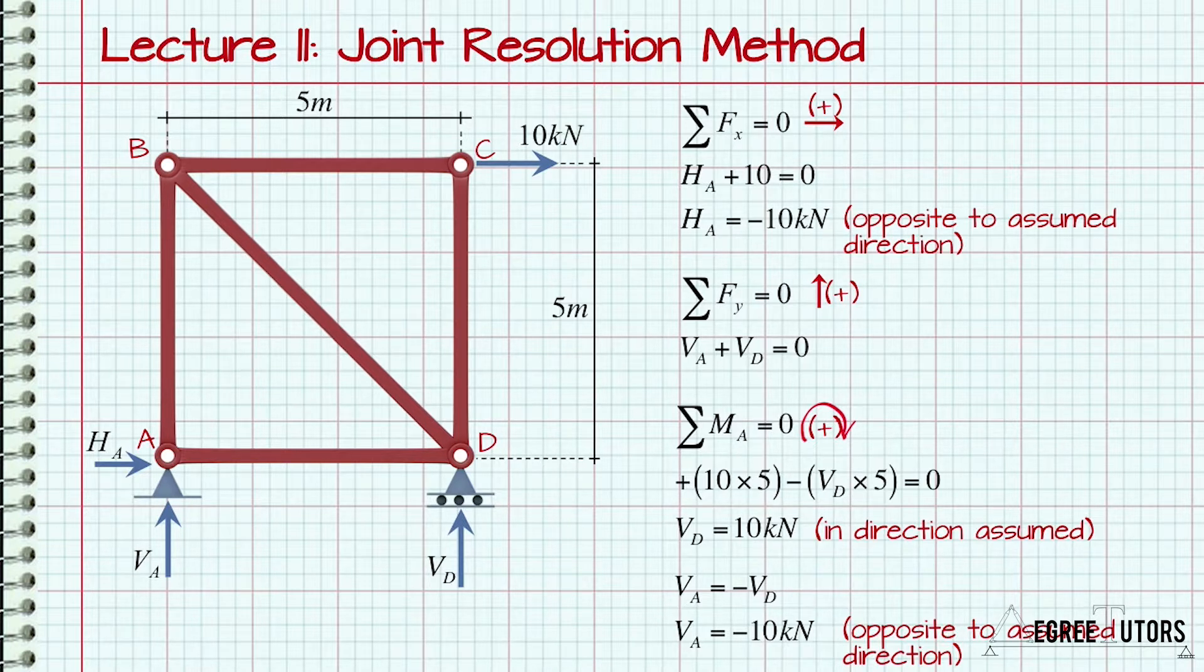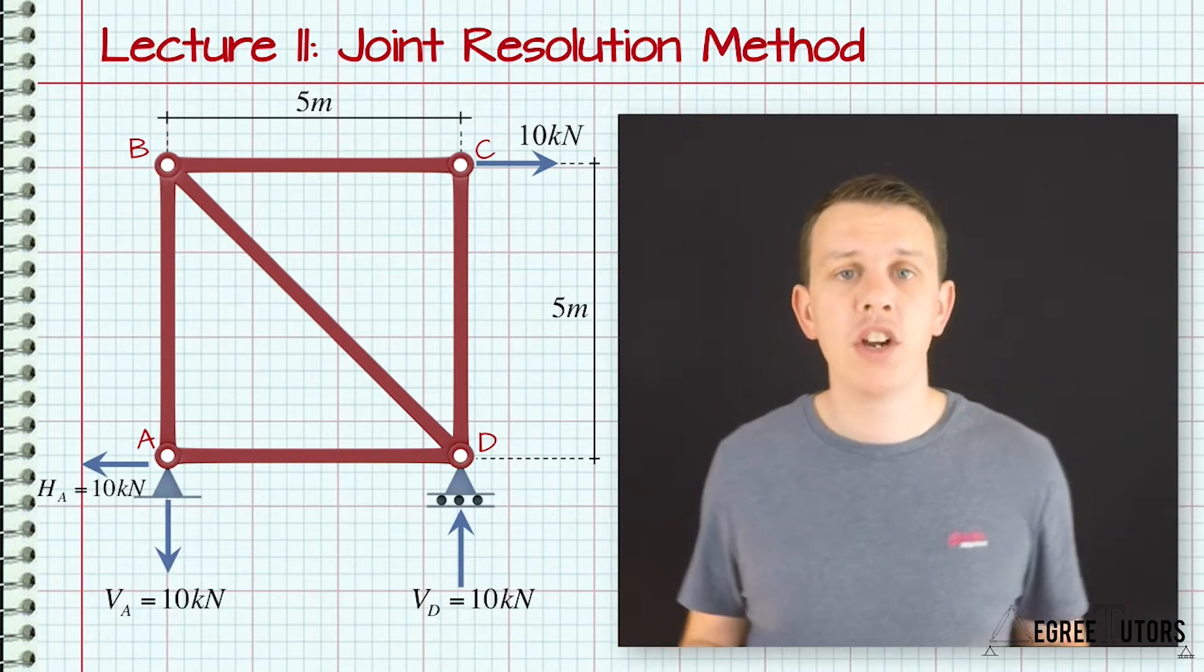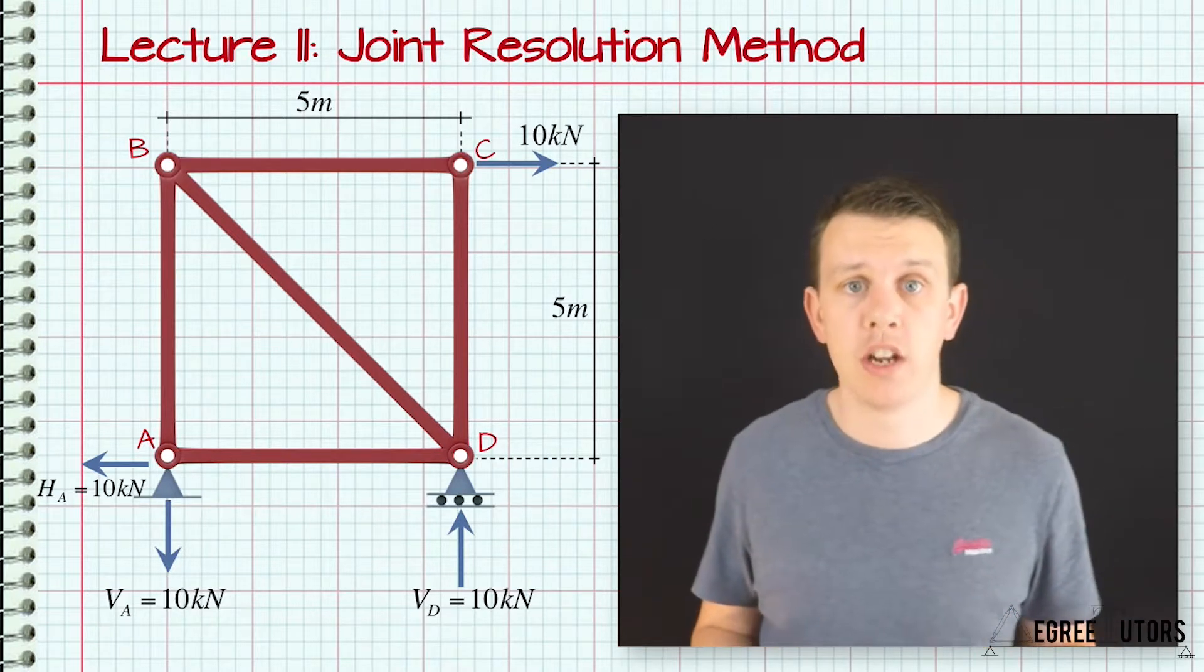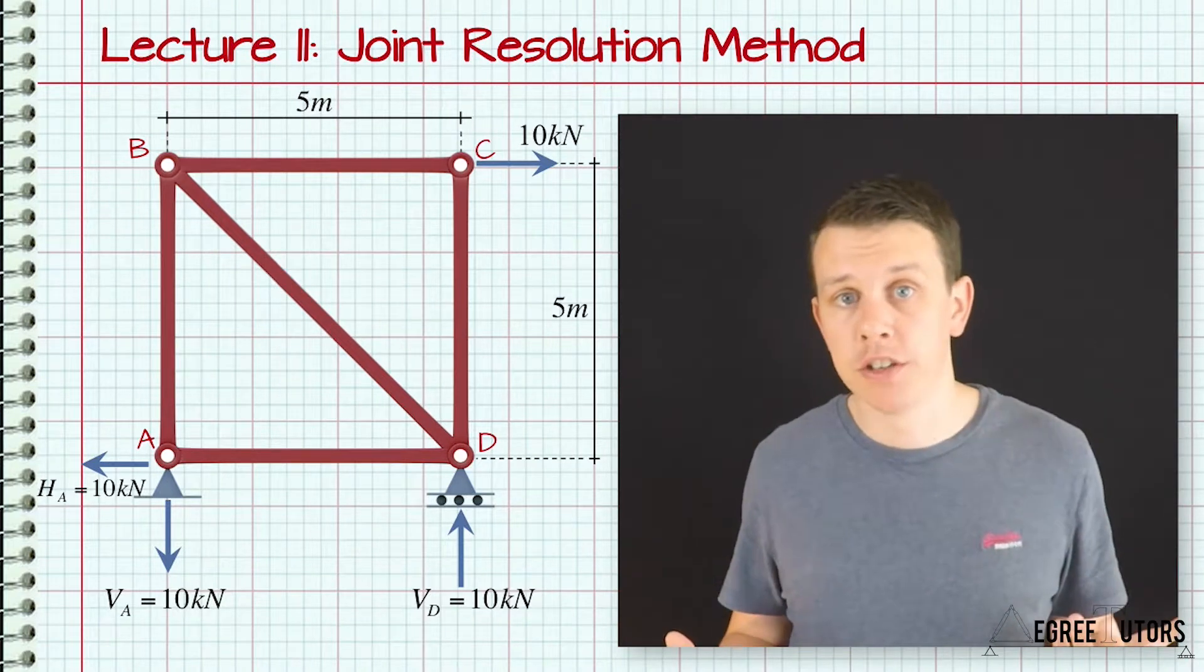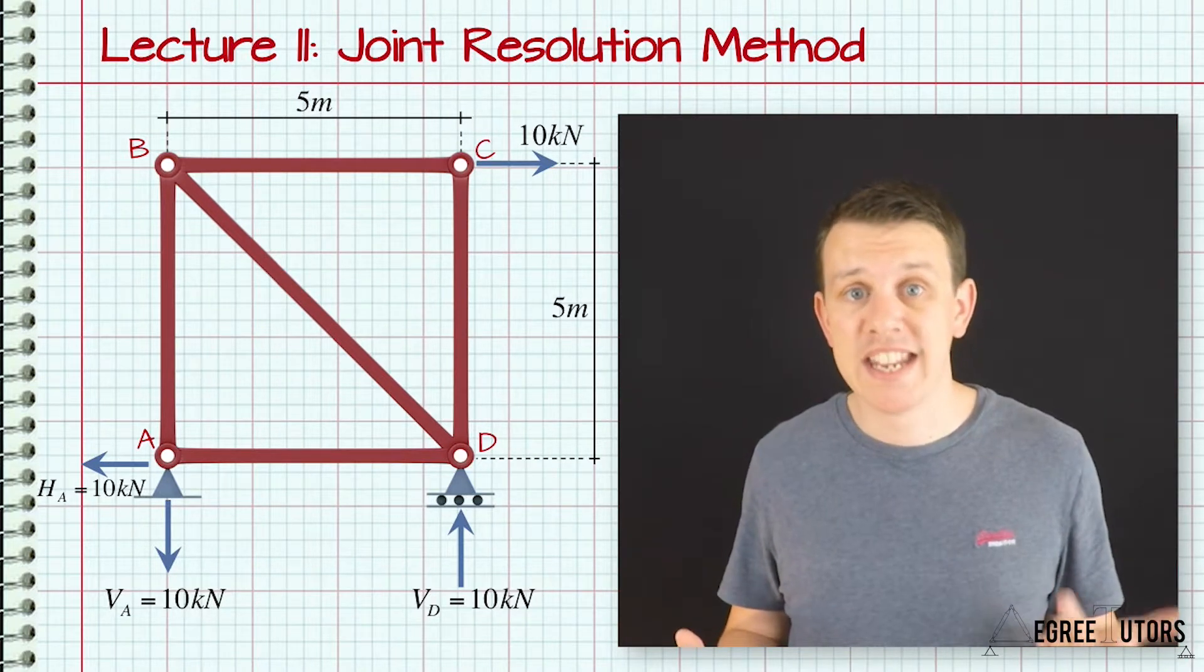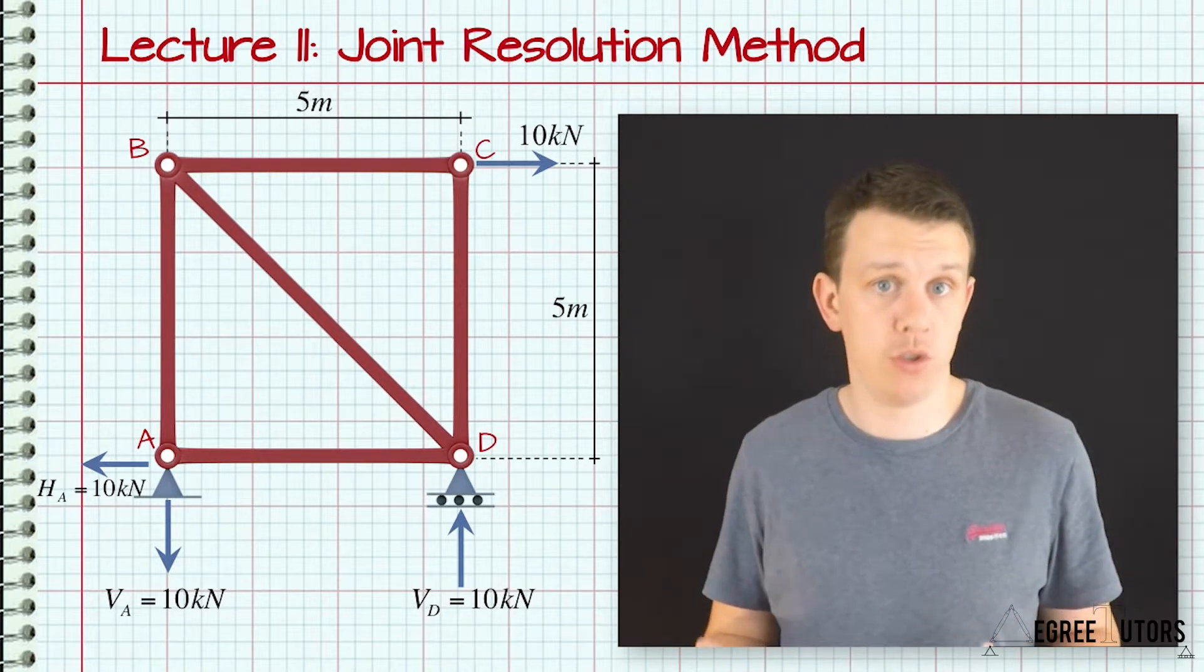It's a good idea at this point to redraw the reaction forces acting in the correct direction. In the joint resolution method, we consider each joint within our structure in isolation. To do this, we start off by making an imaginary cut through all of the members that connect into the joint of interest. Now when making this cut through these members, what we're doing is essentially revealing the internal member forces inside each member we cut through.